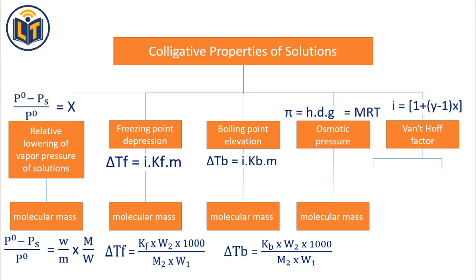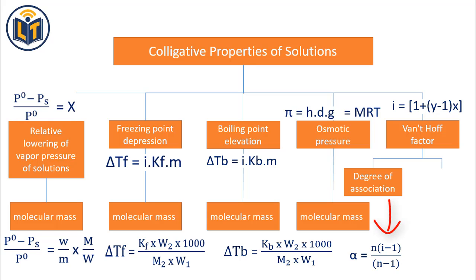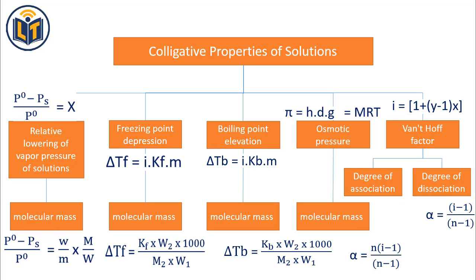Next is degree of association. It is the fraction of the total substance that undergoes association. Degree of association is the number of moles associated divided by the total number of moles taken. Next is degree of dissociation. It is the fraction of the total substance that undergoes dissociation. Degree of dissociation is the number of moles dissociated divided by the total number of moles taken.